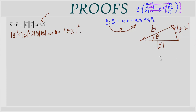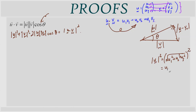When you have the square of a modulus, you are essentially removing the square root. A modulus equals the square root of the sum of the squares of the x, y, and z components — Pythagoras' theorem. So the square of the modulus gives us the sum of the squares of the individual components x, y, z.